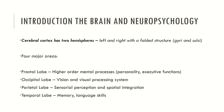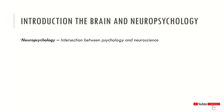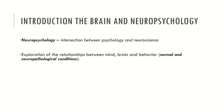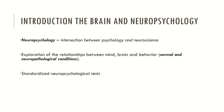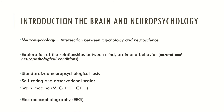So the cerebral cortex is divided into four major areas: frontal lobe, parietal lobe, occipital lobe and temporal lobe. These major areas are responsible for all mental processes and neurocognitive functions. So why is the brain so important to neuropsychology? Neuropsychology is the intersection between psychology and neuroscience, and it is concerned with the exploration of the relationships between mind, brain and behavior — which could be normal or abnormal, but essentially the abnormal conditions are related to neuropathological diseases. Neuropsychology explores these relationships through several instruments: standardised neuropsychological tests, self-rating and observational scales, brain imaging and electroencephalography.